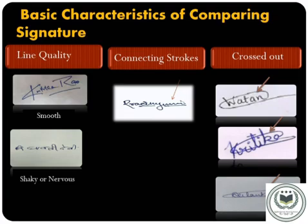Second: connecting strokes. Connecting strokes are similar to pen lifts and separations. This analyzes whether or not the capital letters are connecting to the lowercase letters and if words are connected. Here are examples of connecting strokes in the last 2-3 letters of the signature in this picture.